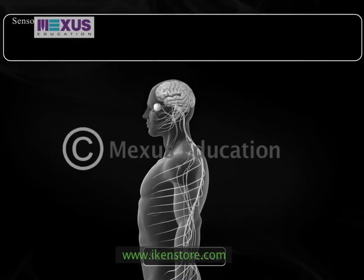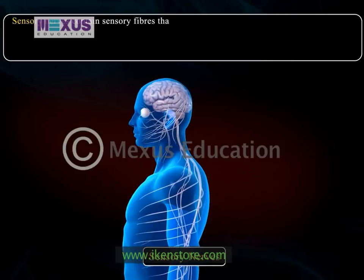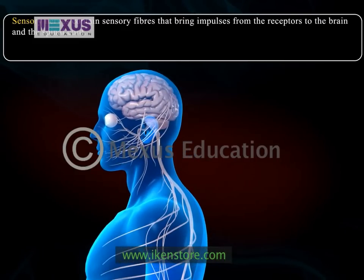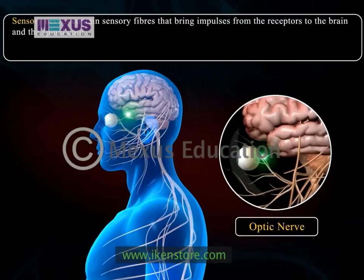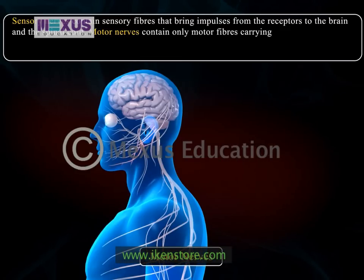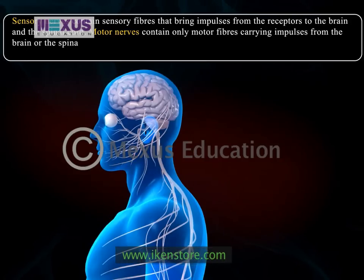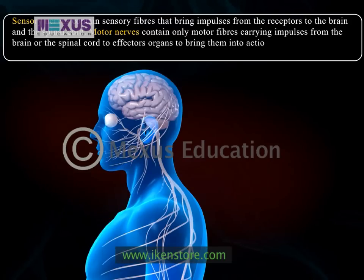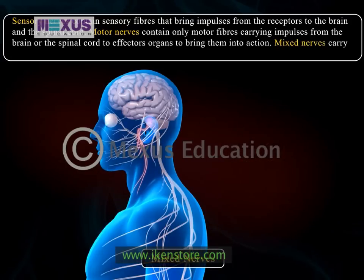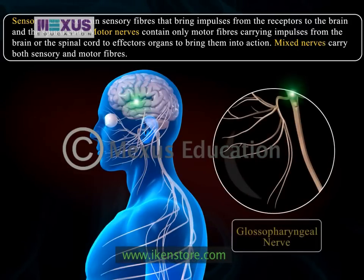The first type is a sensory nerve, which contains sensory fibers that bring impulses from the receptors to the brain and the spinal cord. For example, the optic nerve arising from the eyes and ending in the brain. The second type is a motor nerve, which contains only motor fibers carrying impulses from the brain or the spinal cord to effector organs to bring them into action. For example, the facial nerve arising from the brain. The third type is a mixed nerve, which carries both sensory and motor fibers. For example, the glossopharyngeal nerve.